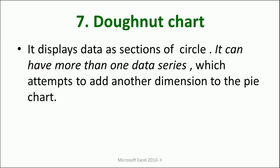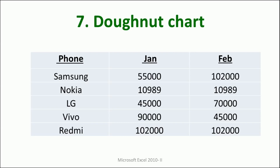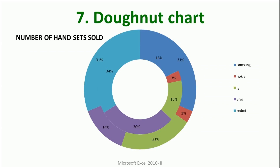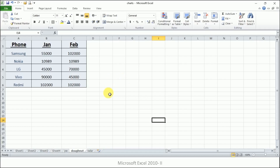Let's see an example. We have two data series: various companies and the number of handsets sold by each company in January and in February. When we put this data into a donut chart, it will look like this. The inner circle represents January and the outer represents February. The blue section representing Samsung shows that more Samsung handsets were sold in February.